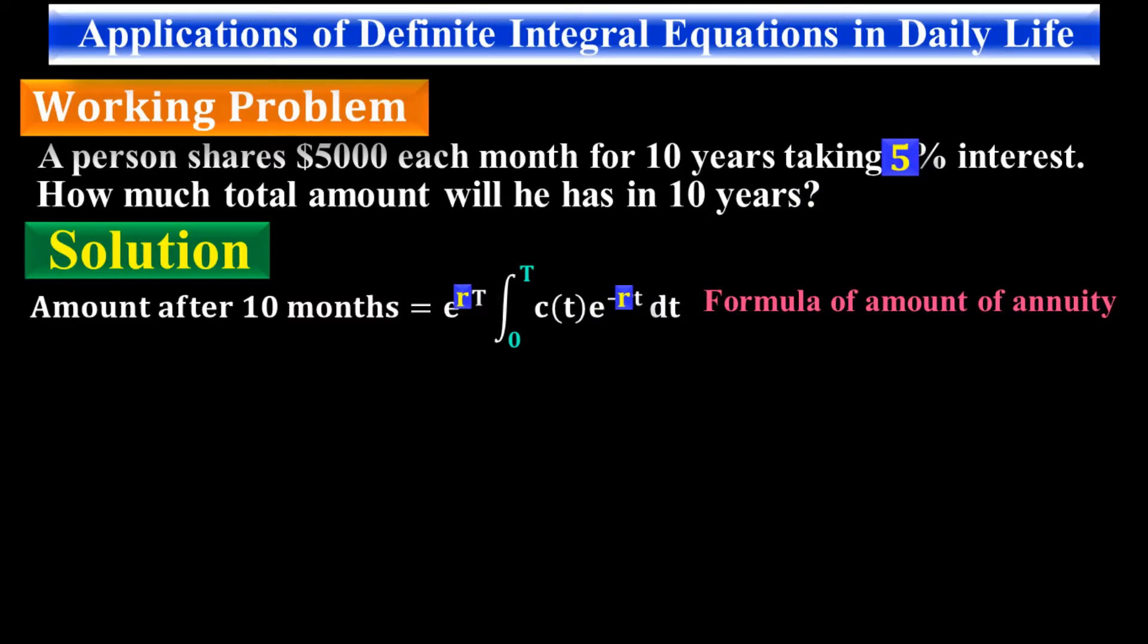R is the interest rate which is 5%. t is the time period which is 10 years. Substitute these values to have e to the 0.05 times 10, integral of 5000 times e to the minus 0.05 times t dt.